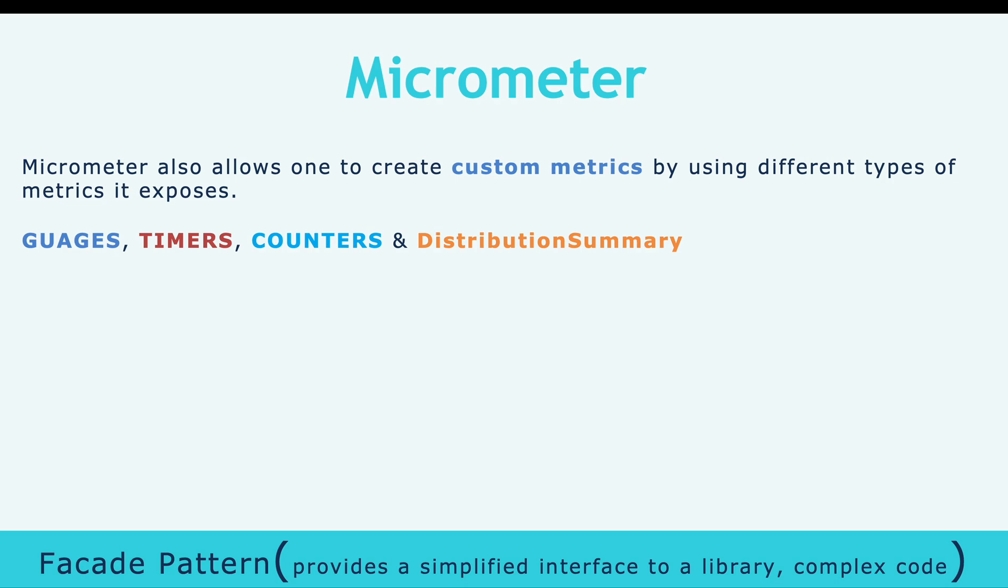Micrometer allows us to create custom metrics by using different types of metrics it exposes. There are gauges, timers, counters, and distribution summaries. If you want to provide your own custom metrics in your Spring application, you can implement these four types.